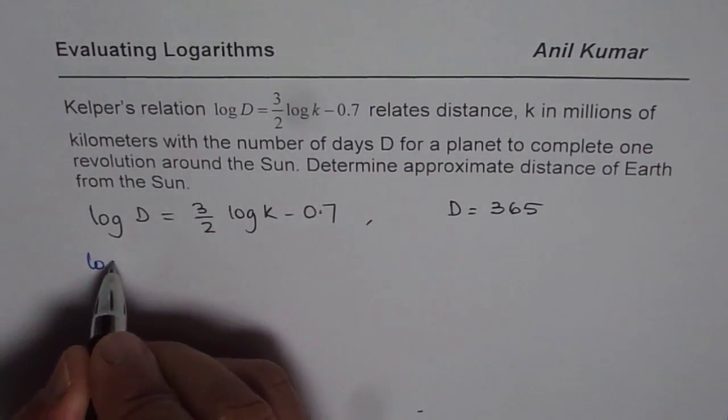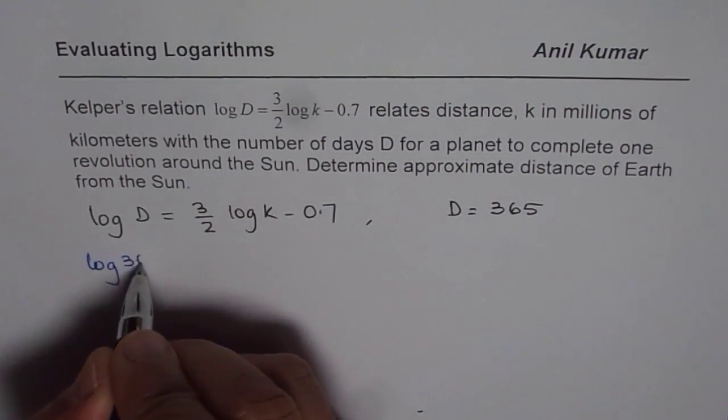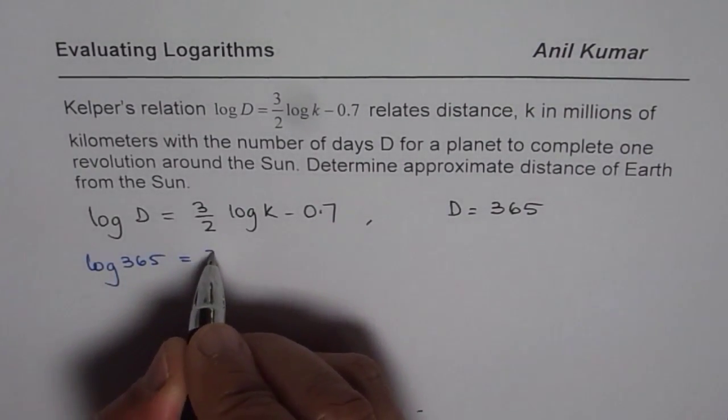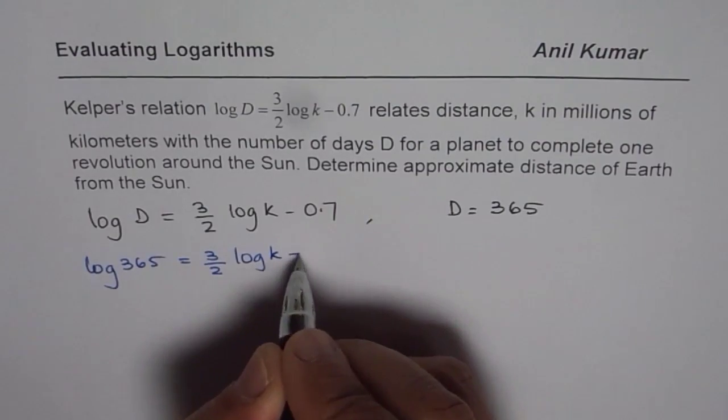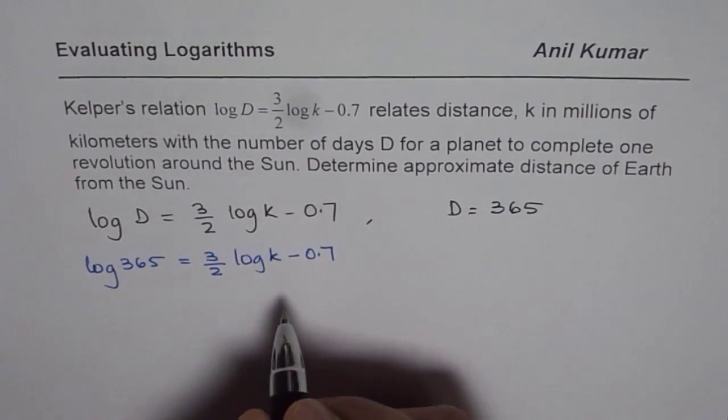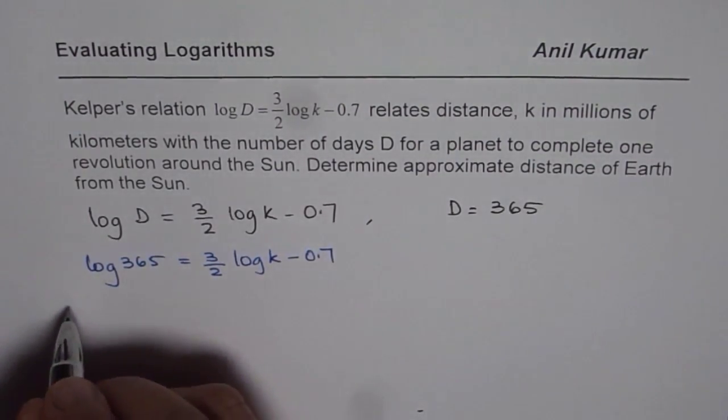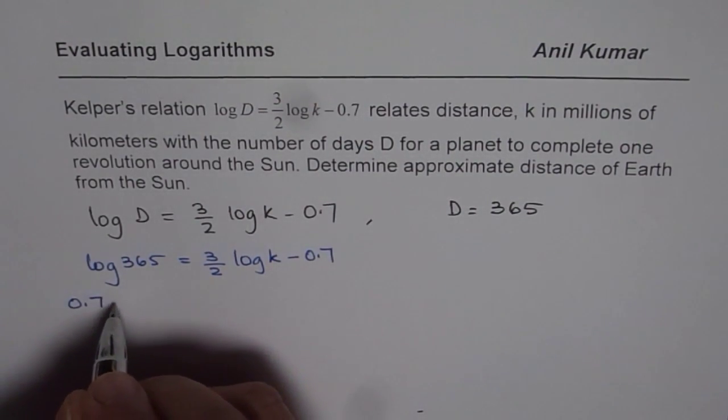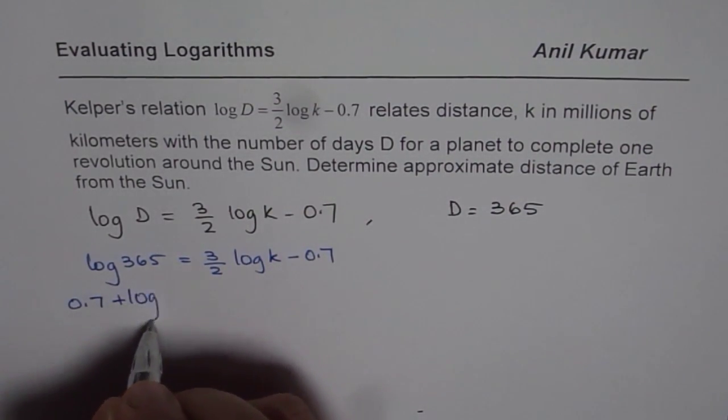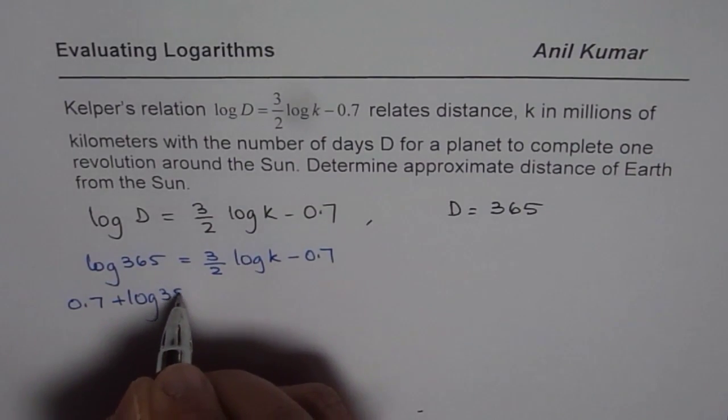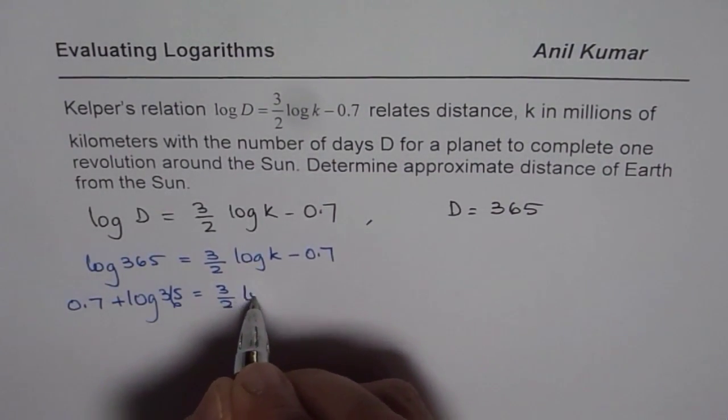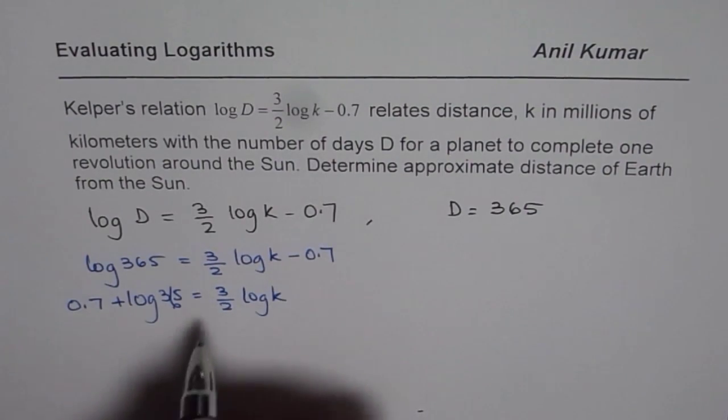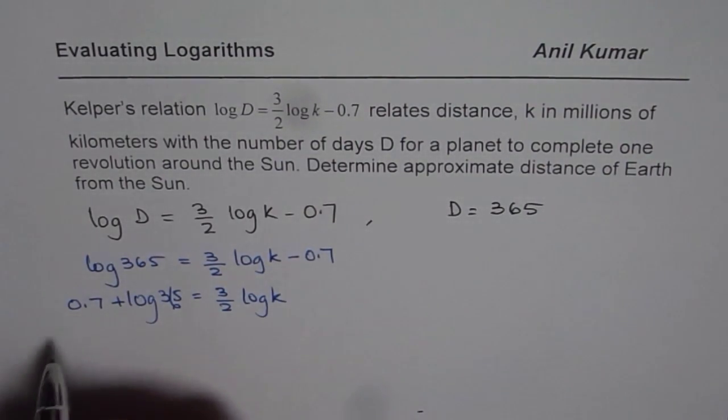So we get log 365 equals 3 over 2 log k minus 0.7. We can now rearrange it, bringing 0.7 to the right side. We get 0.7 plus log 365 equals 3 over 2 log k. And then we can multiply this by 2 over 3.